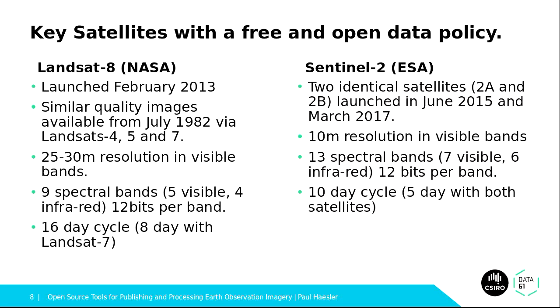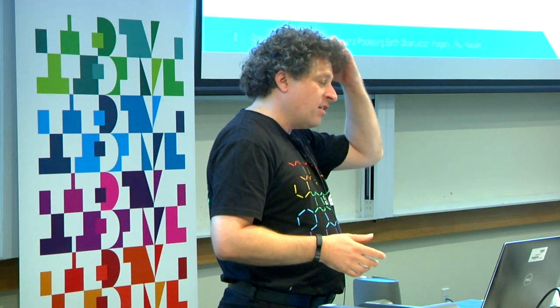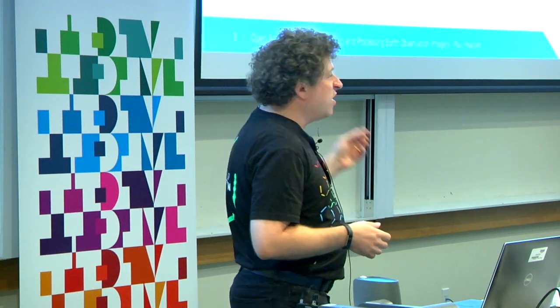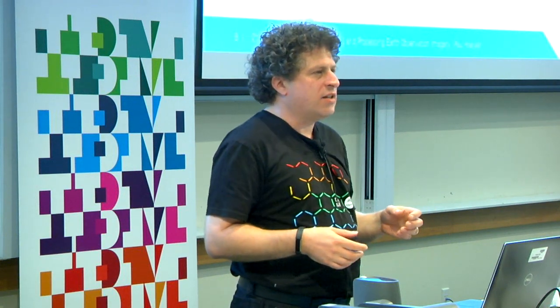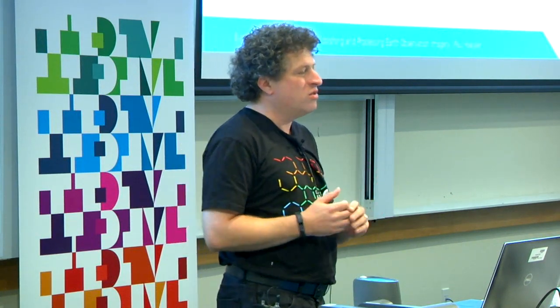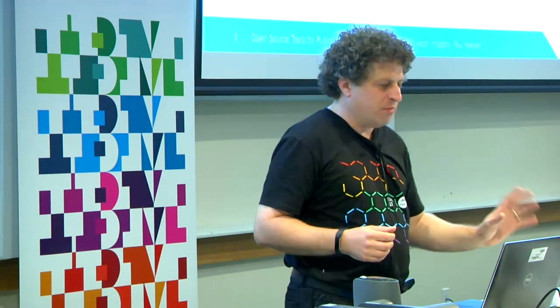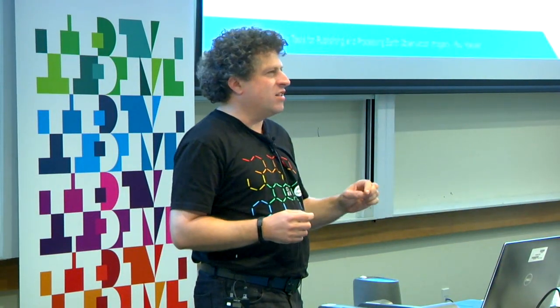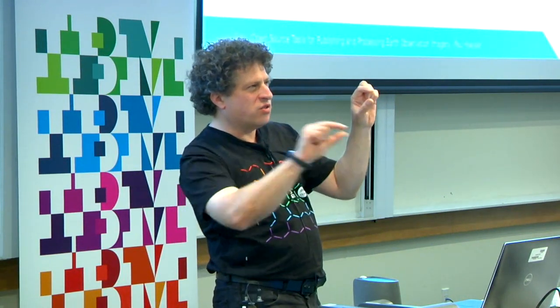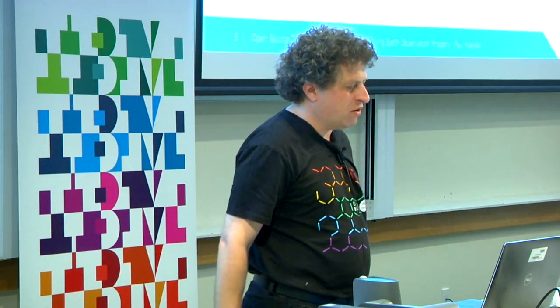Sentinel-2 has 13 spectral bands — 7 visible and 6 infrared — compared to about 9 on Landsat. Sentinel-2 covers the entire Earth over a 10-day cycle, but because there are two satellites, Sentinel-2A and Sentinel-2B in staggered orbits, if you combine data from both it's actually a five-day cycle, whereas Landsat 8 has a 16-day cycle. You can get that down to 8 by combining it with data from Landsat 7, which is still operating. But Landsat 7 isn't exactly the same as Landsat 8 — unlike Sentinel-2A and 2B, which are identical. Landsat 7 has one less spectral band and also has an optical flaw that developed about four years after launch, resulting in horizontal gaps or strips through the data.